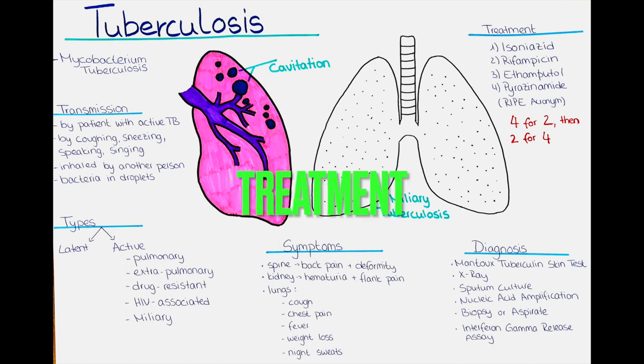How can we treat tuberculosis? The treatment of tuberculosis involves a combination of antibiotics for a minimum of 6 months. The most commonly used antibiotics include isoniazid, rifampicin, ethambutol, and pyrazinamide. The choice of antibiotics and the duration of treatment depend on the severity of the disease and the susceptibility of the bacteria to the drugs.